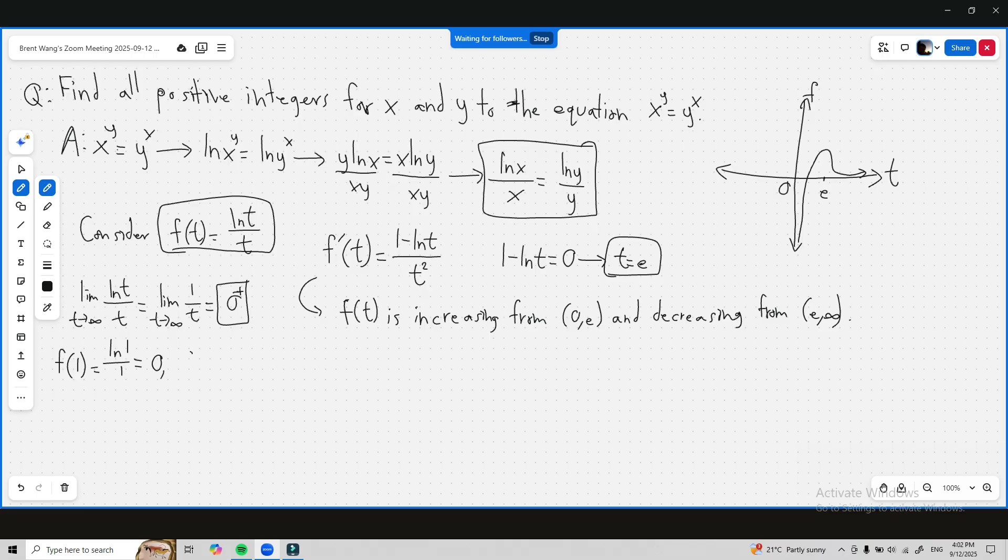f of 2 is equal to ln 2 over 2, and if you were to plug this into a calculator this would be approximately 0.35.